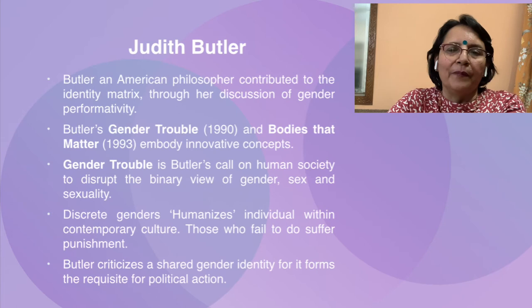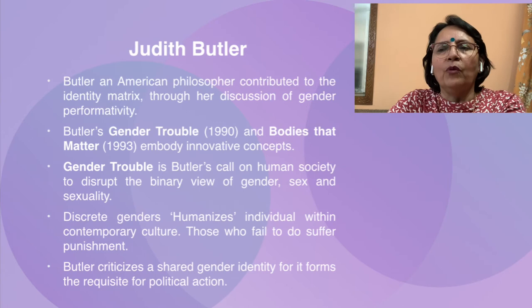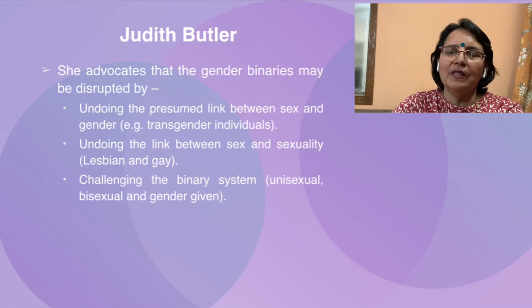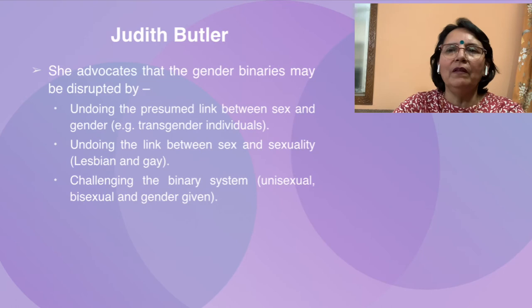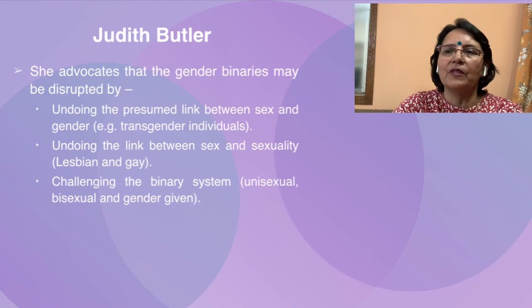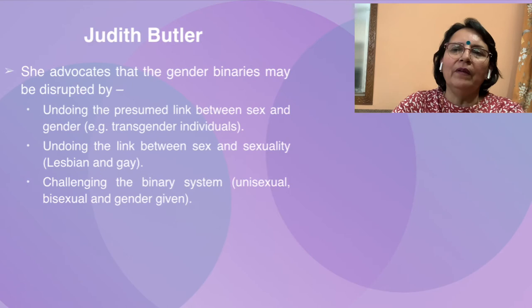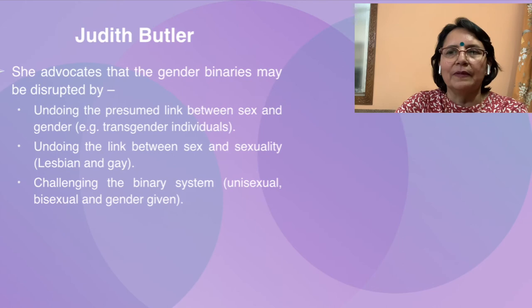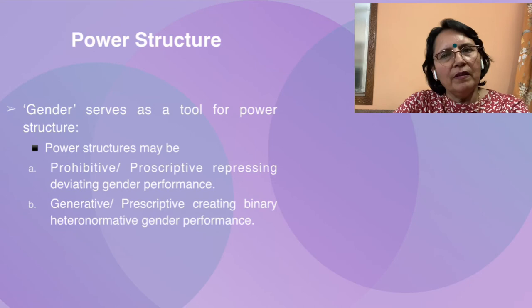Butler criticizes a shared gender identity for it forms the requisite for political action. She advocates that gender binaries may be disrupted by mechanisms such as: undoing the presumed link between sex and gender — as seen with transgender individuals; undoing the link between sex and sexuality — as with lesbian and gay categories; or by challenging the binary system itself through categories like unisexual and bisexual. Butler also says that gender relations are power relations because gender serves as a tool for power structure.